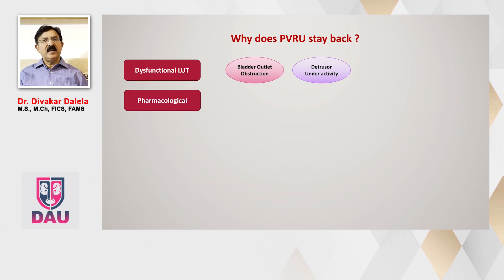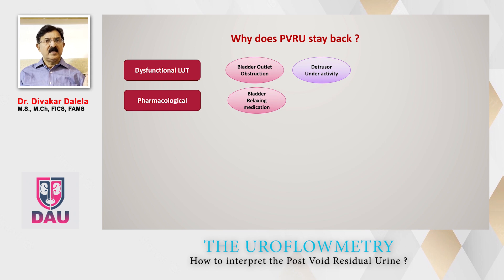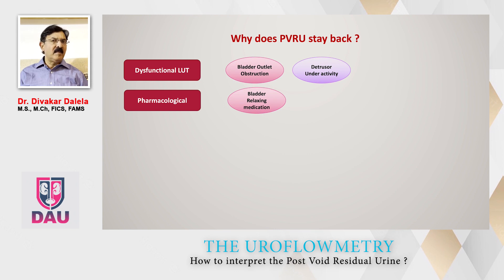The second situation is a pharmacological consequence of a drug recently prescribed to the patient. A patient visits a physician who gives him an anticholinergic medication for chest disease, abdominal pain, or uterine conditions. These medicines have bladder-relaxing effects, and therefore the patient will have a jump in his post-void residual volume.